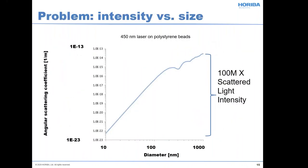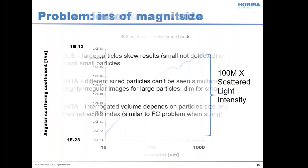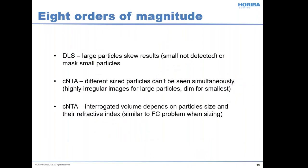Now it's time to move into some of the bad news. If I look at scattered intensity as a function of particle size, I see about eight orders of magnitude variation in scattered light with a two-order-of-magnitude variation in particle size. In DLS, you're going to see a much stronger effect from the larger particles, which will tend to mask the small particles when looking at distributions. With classical nanoparticle tracking analysis, if you set up your system for one particle size, you don't get useful data on other particle sizes. There is also an effect where your observed volume depends on particle size and refractive index, leading to varying effective volumes.